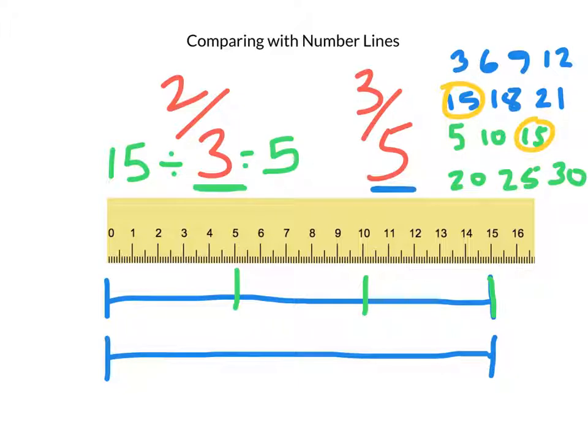And for the other one, I have to think, 15 divided by 5 gives me what? 15 divided by 5 is 3. So to divide into fifths, I'm going to make a mark every 3 centimeters: 3, 6, 9, 12, and 15 would be at the end. And now I have fifths, or 5 equal sections.